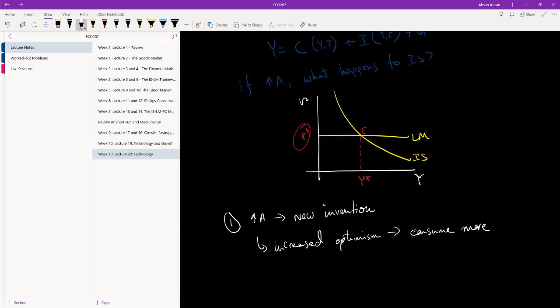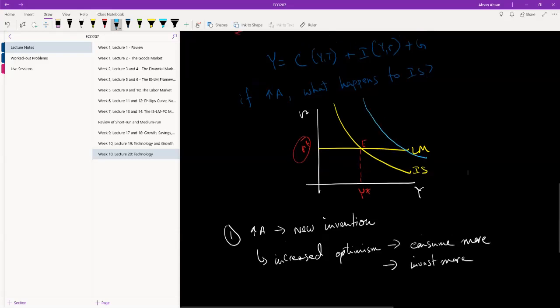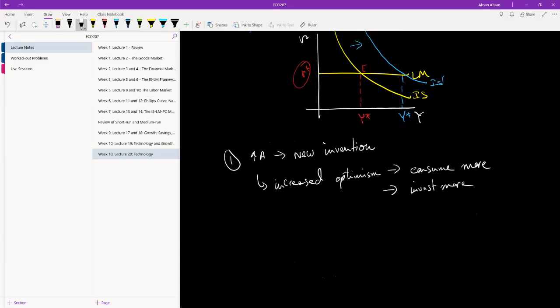Obviously you guys know two things can happen to the IS: it can shift to the right or it can shift to the left. Now if a rise in technology is coming from a new invention that allows us to produce more or produce quicker, something has revolutionized the production process. If this happens, what that is going to lead to is there is increased optimism. Consumers are optimistic, producers are optimistic. Consumers will save less and they will consume more.